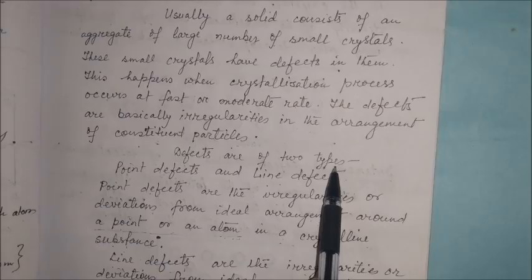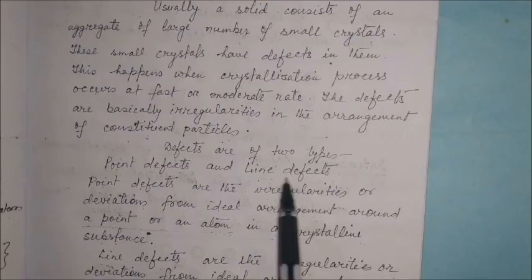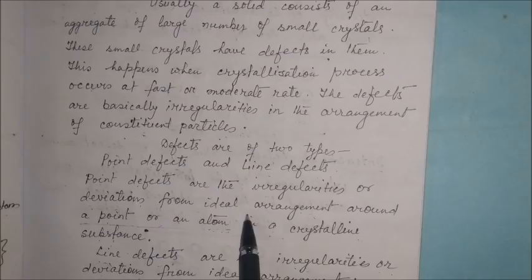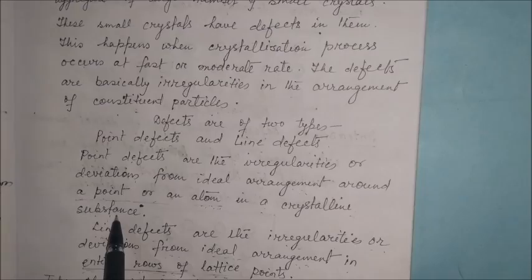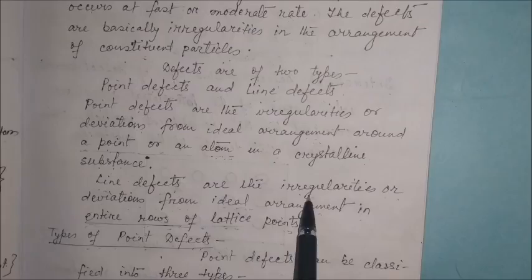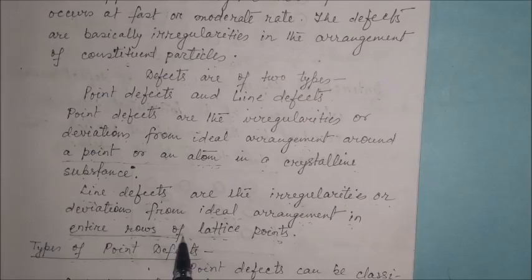There are two types of defects: point defects and line defects. Point defects are irregularities or deviations from the ideal arrangement around a point or an atom in a crystalline substance. In the case of line defects, there are irregularities or deviations from the ideal arrangement in entire rows of lattice points.